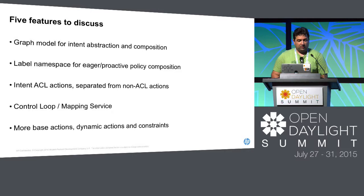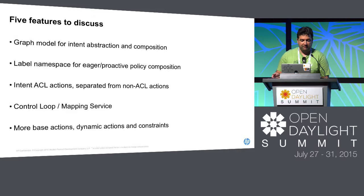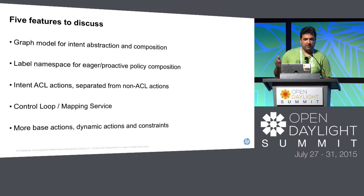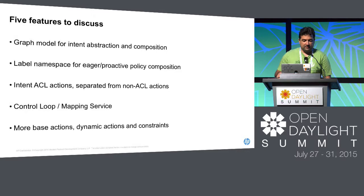Five features to discuss: one is an extension to the model for conflict resolution today. It's a graph model for intent abstraction and composition that JK is going to talk about. Label namespace for eager and proactive policy composition. Intent ACL actions separated from non-ACL actions. Other items like control loop and mapping service. And base actions plus dynamic actions and dynamic constraints — an extension model for those.